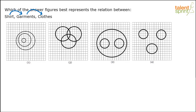Garments are what we wear. A dusting cloth is not a garment, but it is part of clothes. So all the shirts are garments, but not all the garments are shirts. Similarly, all the garments are clothes, but not all the clothes are garments. Therefore, shirt is a subset of garments and garments is a subset of clothes.